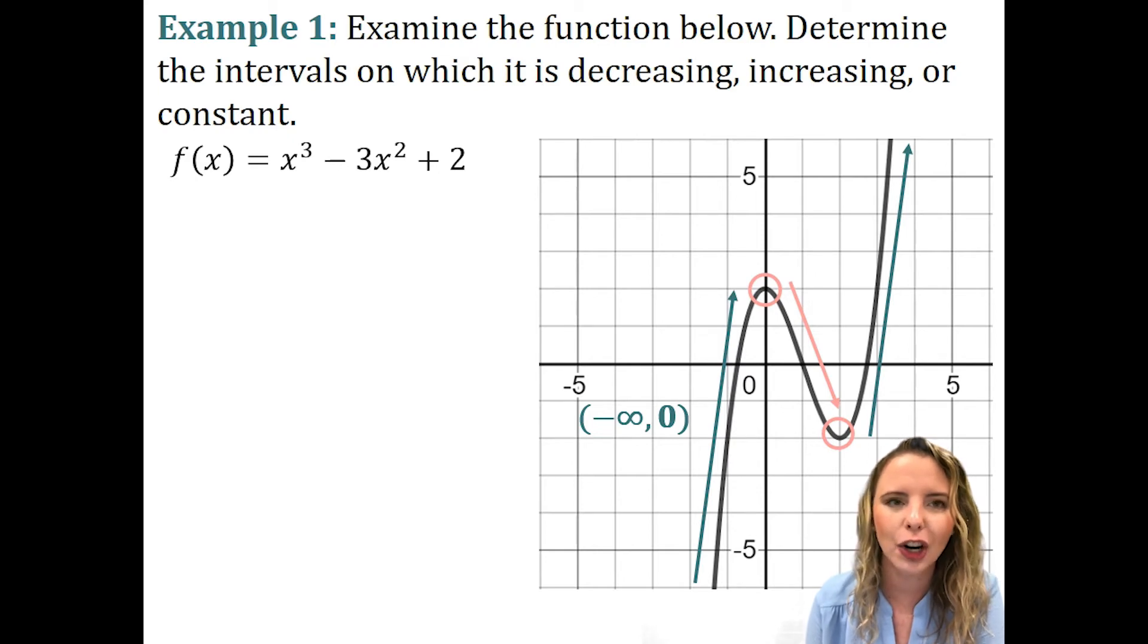As our graph is going down, it's going to negative infinity because we could continually zoom out and we could get to numbers that are larger and larger and larger. So, negative infinity to zero. Zero is where our max is located.